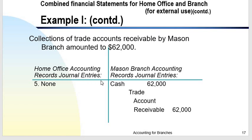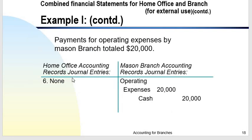Fifth transaction: collection of trade accounts receivable by Mason Branch amounted to $62,000. This is not an intercompany transaction — it is a transaction with other parties. Transactions from other parties are recorded normally: debit Cash, credit Trade Accounts Receivable. Sixth transaction: payment for operating expenses by Mason Branch totaled $20,000. The branch entry is: debit Operating Expenses, credit Cash.